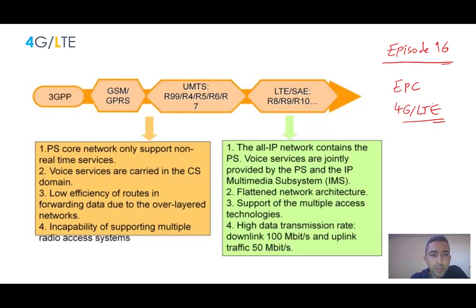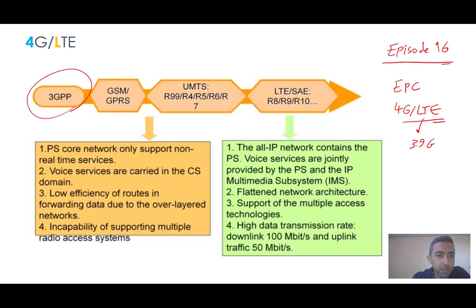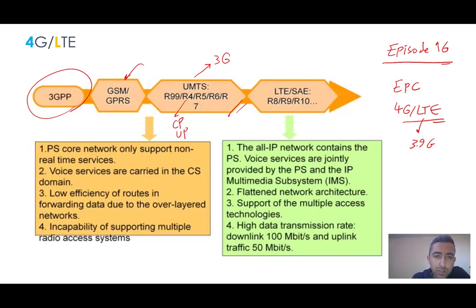LTE, which is Long-Term Evolution, is technically 3.9G but commercially accepted by 3GPP as 4G LTE. Many of these standards are generated by 3GPP, the Third Generation Partnership Project. Until Release 7 we had GSM (2G), GPRS for packet switching, then UMTS for 3G with releases R99 to R7. In R4, we had the separation of the control plane (CP) and user plane (UP).